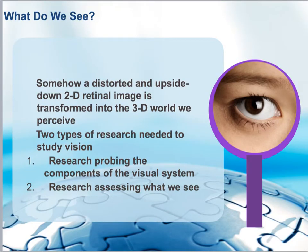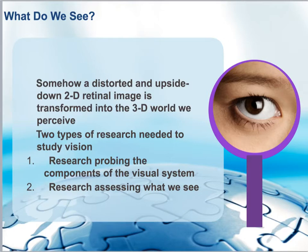Our ability to see is limited to particles of light bouncing off objects and entering our eyeballs — more specifically, our retinas. What you and I are able to see is a distorted and upside-down two-dimensional retinal image, one from the left eye and one from the right eye. Combined, these are transformed into three-dimensional objects, and we are able to perceive the world as we know it.